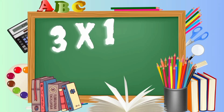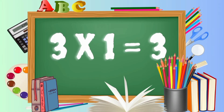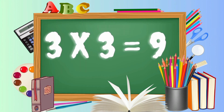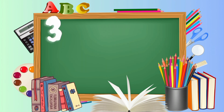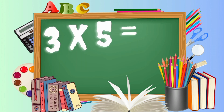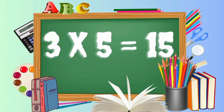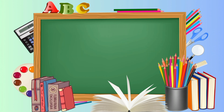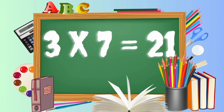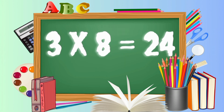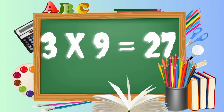Three ones are three. Three two's are six. Three three's are nine. Three four's are twelve. Three five's are fifteen. Three six's are eighteen. Three sevens are twenty-one. Three eights are twenty-four. Three nine's are twenty-seven.